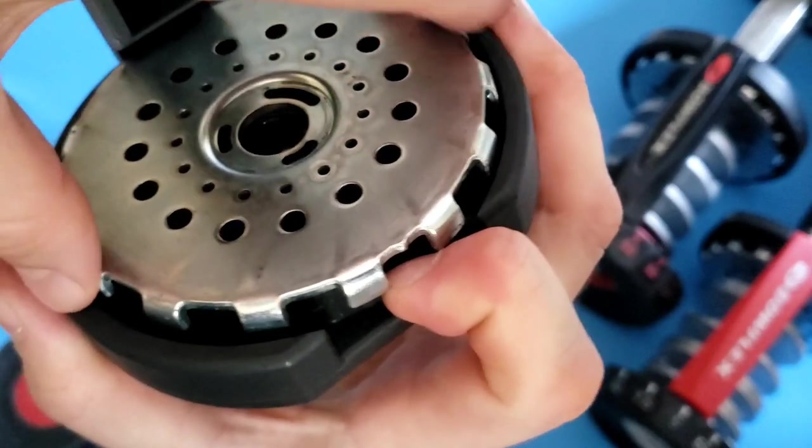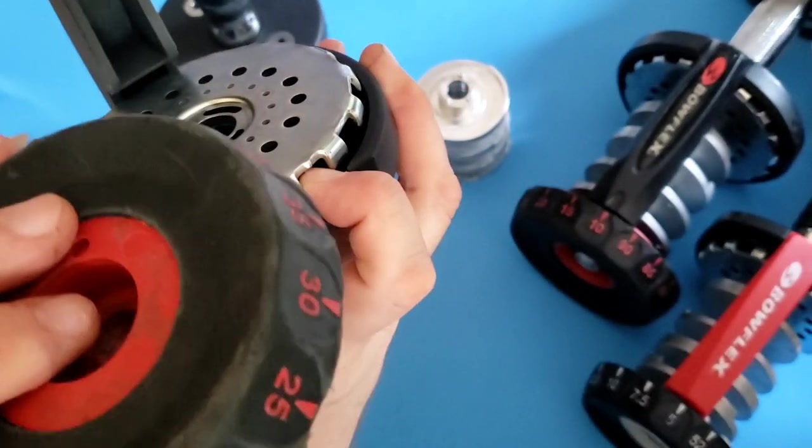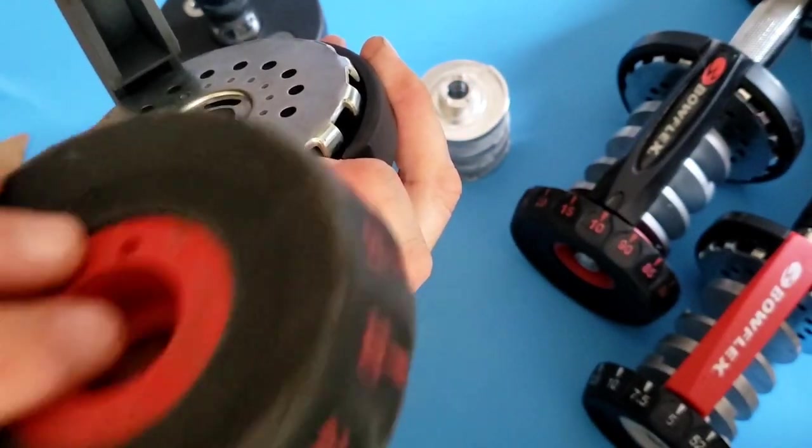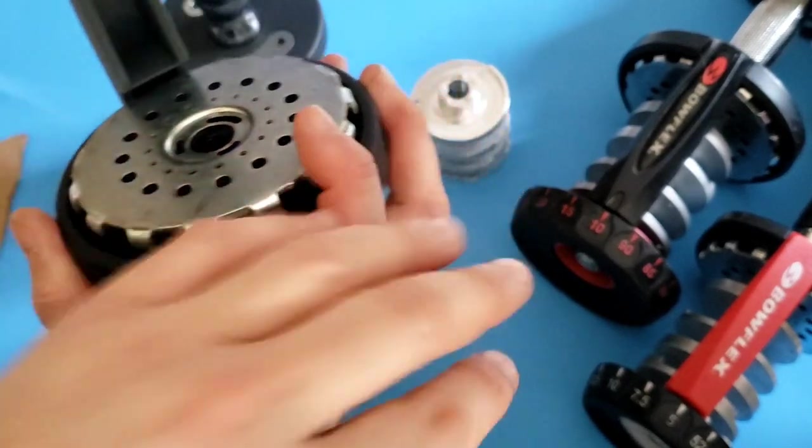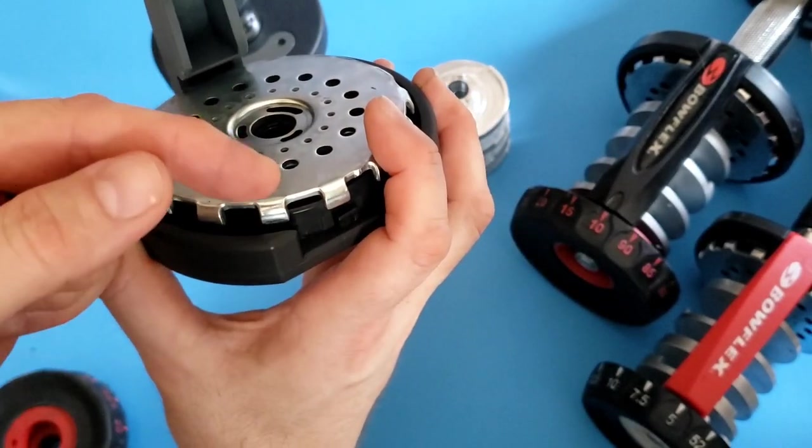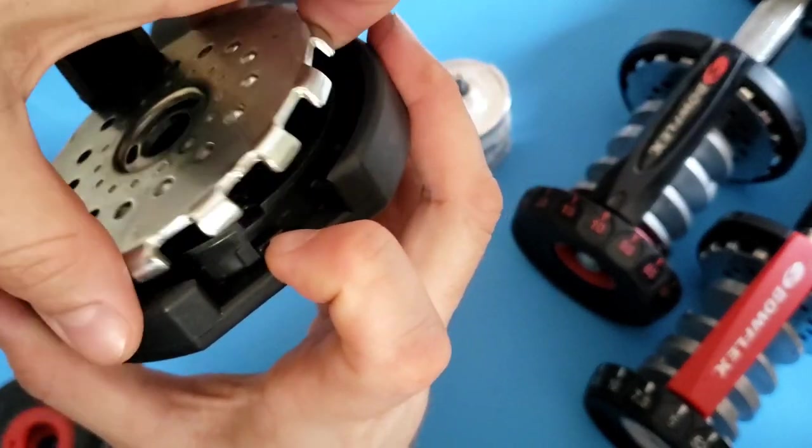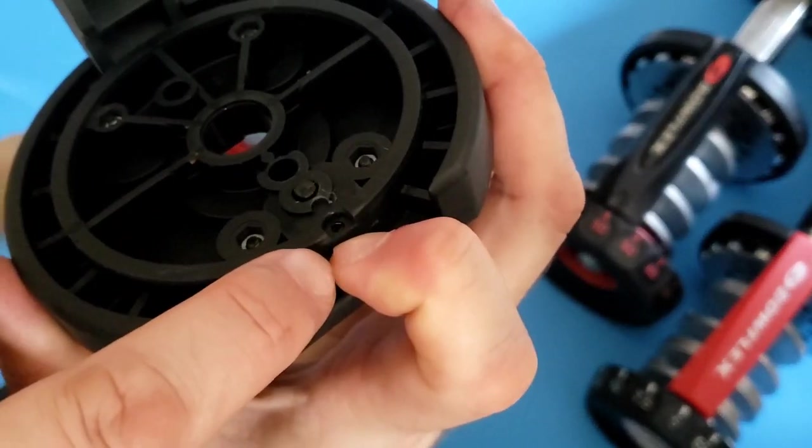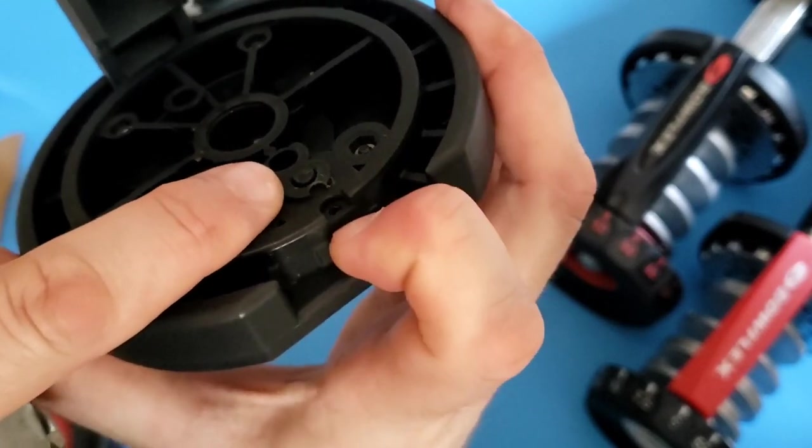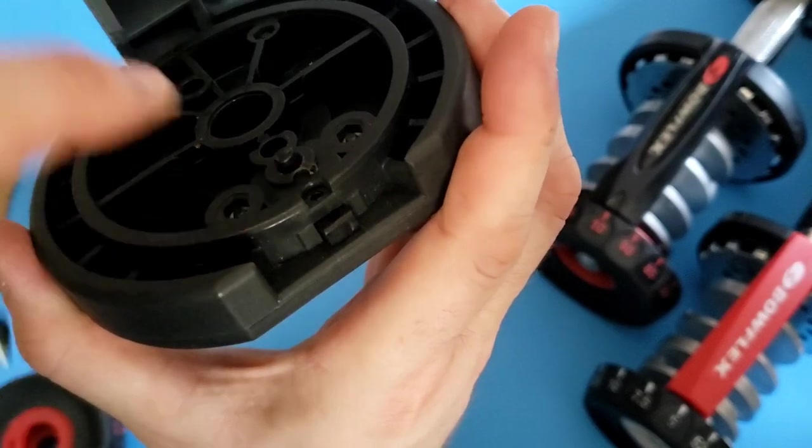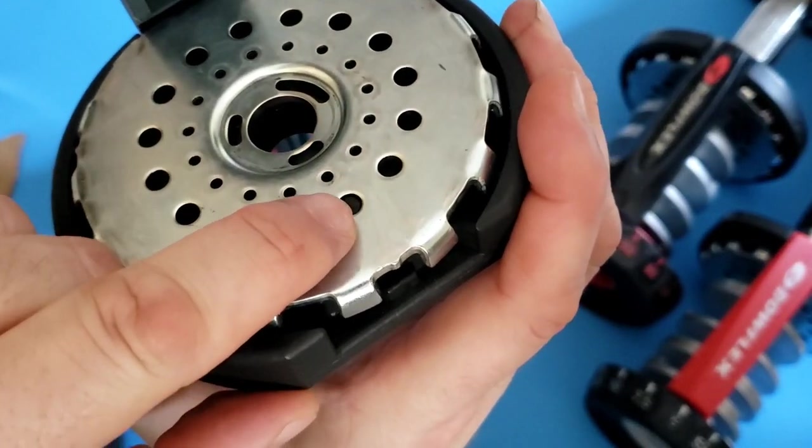And this is free to rotate, which means you can change your weights, the amount of weight on your dumbbell. Now when you lift your dumbbell from the base to use it in your workout, the button is then released, and this pin, as you can see, comes out.